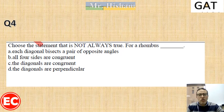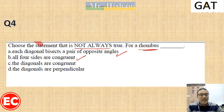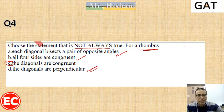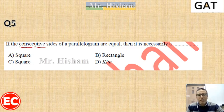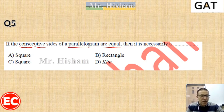Question: choose the statement that is not always true for the rhombus. Does the diagonal bisect the vertex angle? Yes, that is true. Are all four sides congruent? Yes, that is true. Are the diagonals congruent? No — diagonals are not congruent in the rhombus, so this is not always true. Are the diagonals perpendicular? Yes, always. Also: if the consecutive sides of a parallelogram are equal, it gives us a rhombus, not a square, because the parallelogram needs a right angle or equal diagonals to become a square.